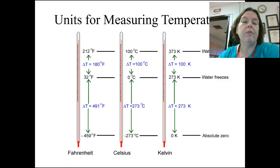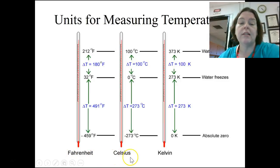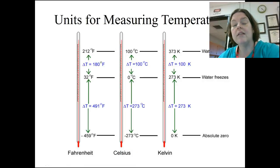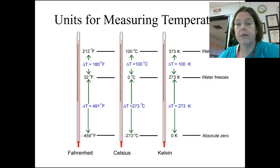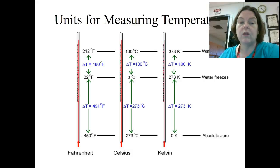Units for measuring temperature: we have three units. In our country, we measure temperature in Fahrenheit almost exclusively, but in science we measure in Celsius. There's also the Kelvin scale, which is introduced when we get to gas laws. The Kelvin scale has no negative numbers — that's its beauty, because it predicts there will be no negative volumes. Celsius is our usual, but Kelvin can also be used. Fahrenheit is not used in science at all — your numbers should always be in Celsius.